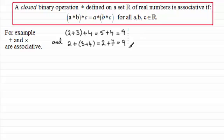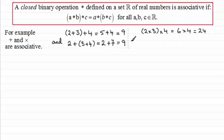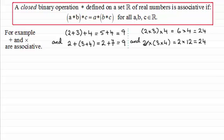Now I can do a similar thing to show that multiplication is associative. Suppose I take the same numbers 2, 3 and 4. If I do 2 times 3 first and then multiply by 4, we get 6 times 4 which equals 24. And if I do it the other way — multiply 3 by 4 first — we get 2 times 12, which is 24. So multiplication is also associative.